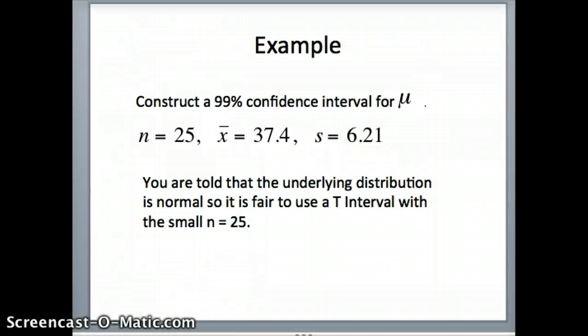In this example, we want to construct a 99% confidence interval for the mean mu. Let's say this is n of 25. This is x-bar is 37.4. And s is 6.21. So let's say this is the number of patients that a dental hygienist may see over the course of a week. And you want to see what that would mean if we had everybody. Now, n is small here. So the only way this is fair is if the underlying data set is normal. So I am telling you that we can assume normality for this data set. We can assume this comes from a bell-shaped distribution.